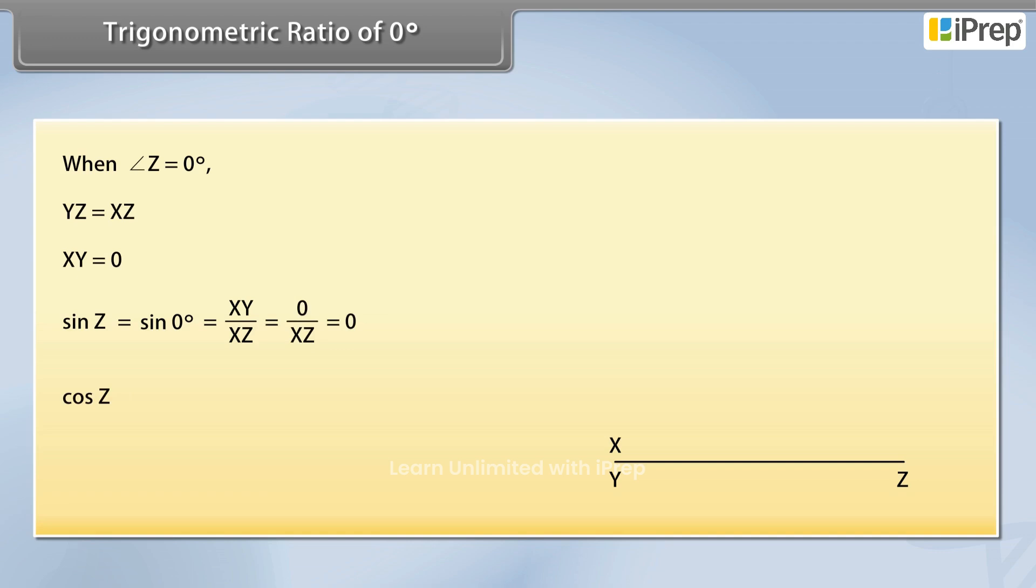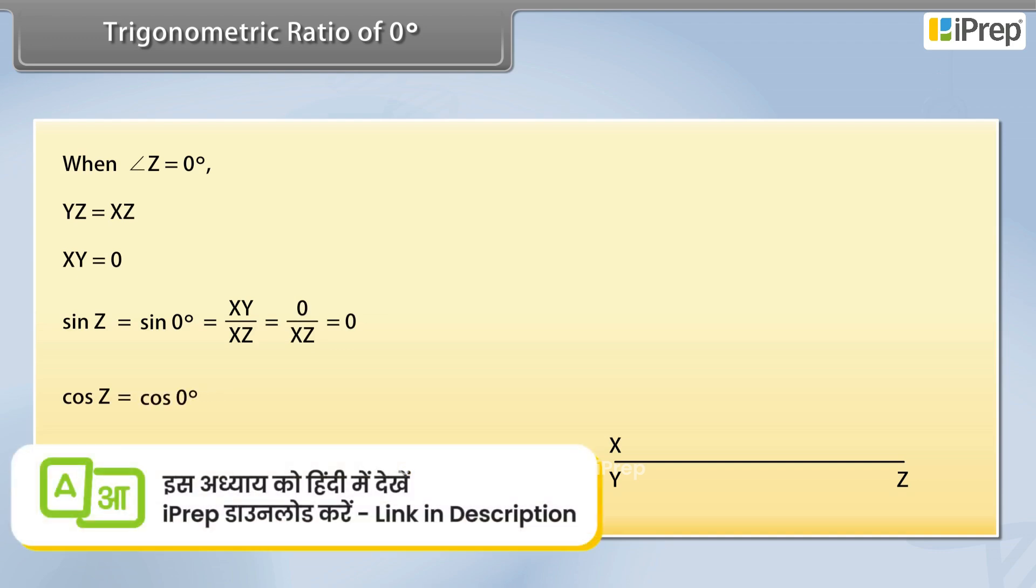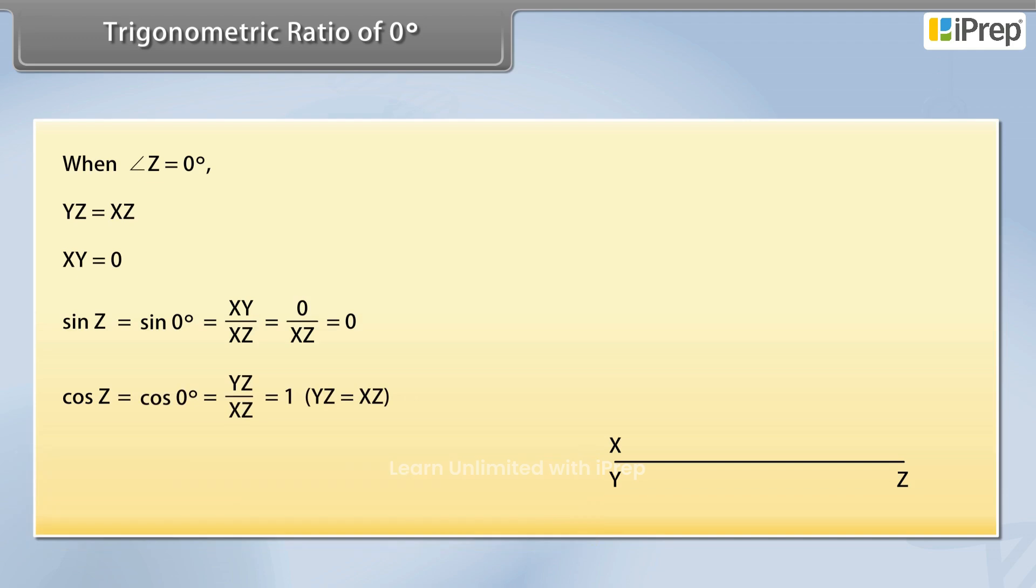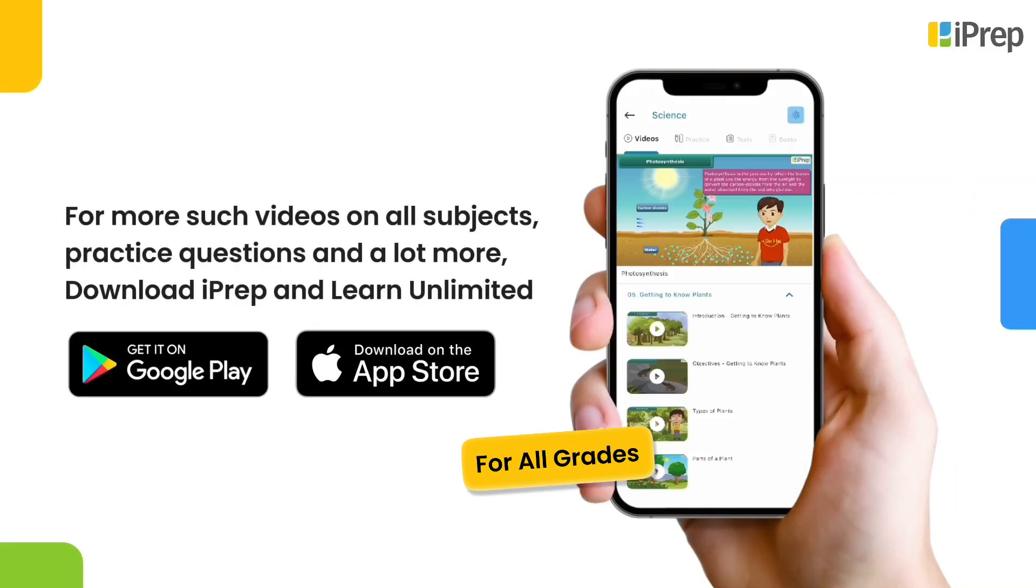Cos Z equals cos 0° which equals YZ upon XZ which equals 1 as YZ is equal to XZ. Tan Z equals tan 0° which equals XY upon YZ equals 0 upon YZ which is equal to 0.